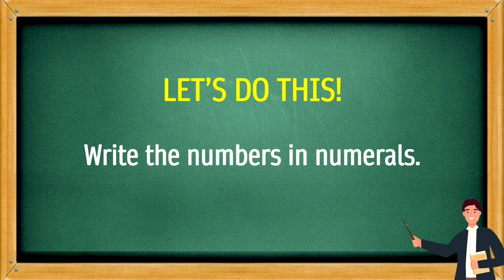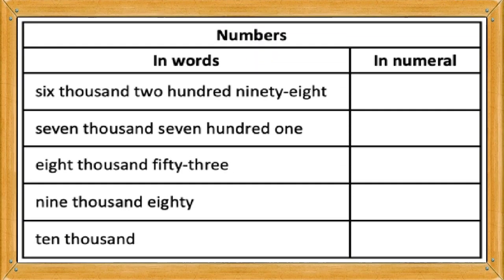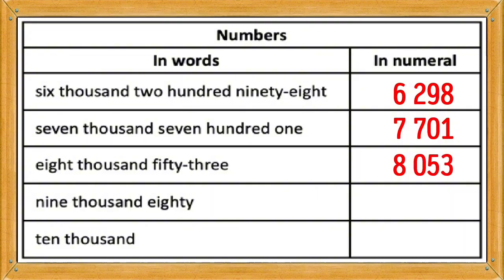Let's do this. Write the numbers in numerals: 6,298 — 7,701 — 8,053 — 9,080 — 10,000.